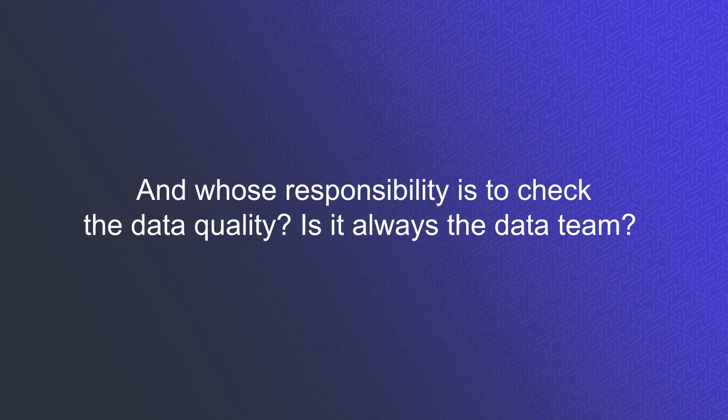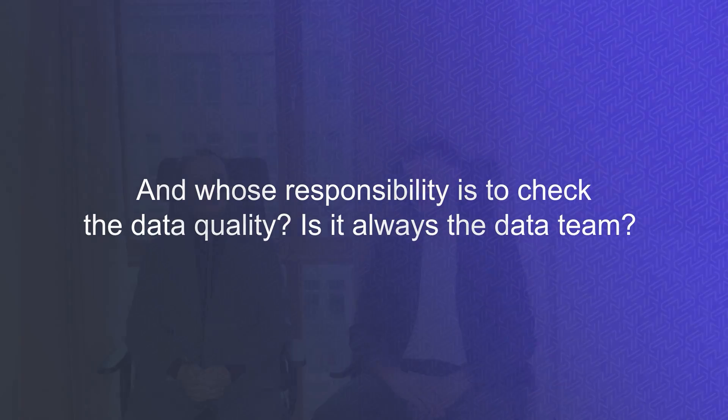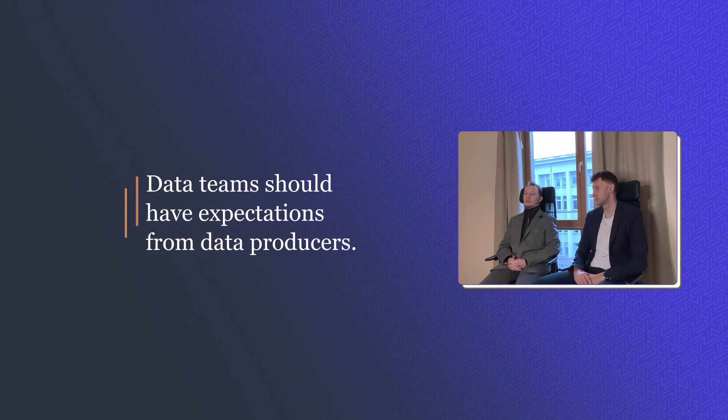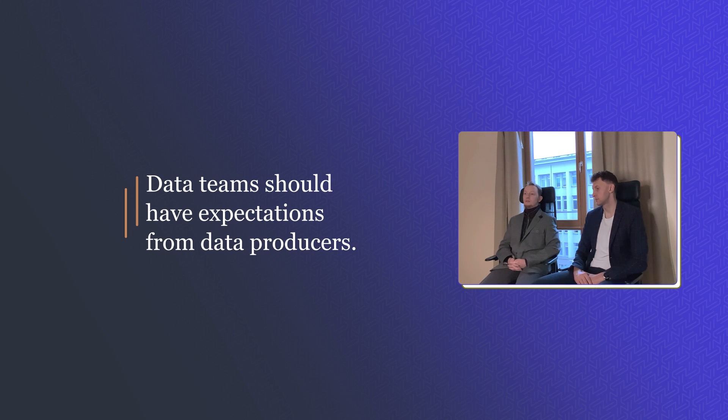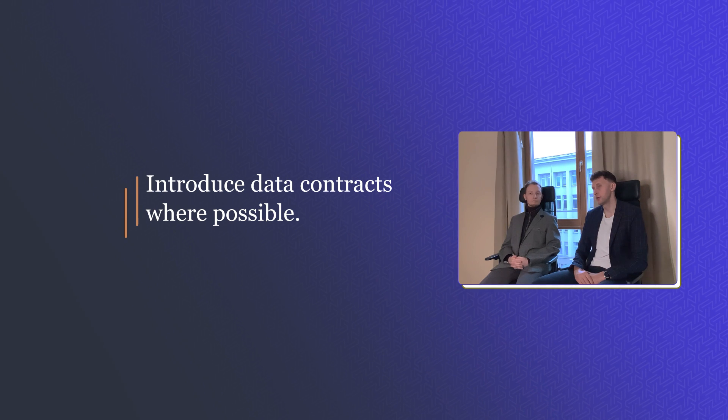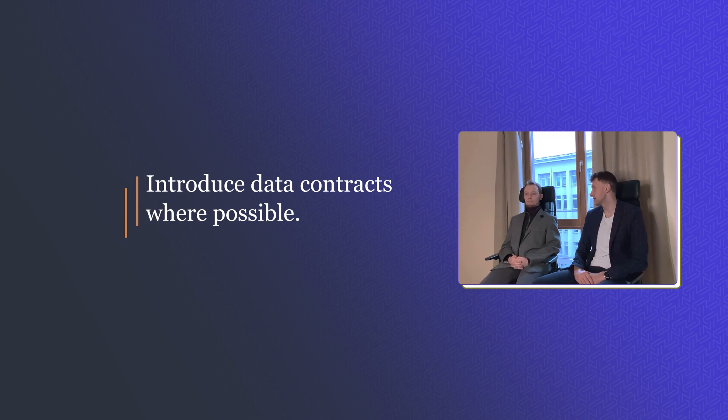From our experience, data teams and engineering teams are usually very proactive at spotting data quality issues, but it would be much easier to work with data if data contracts were in place. However, it depends on the organization — in some organizations you have control over producer systems and data contracts are a great idea, but in others you rely on third-party data and introducing contracts is extremely hard.